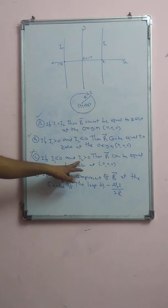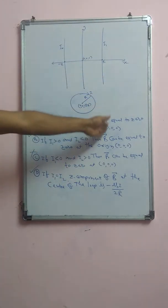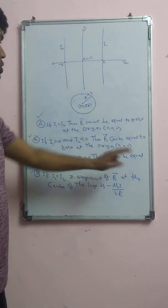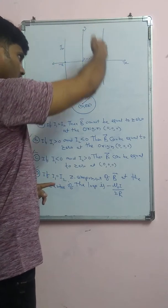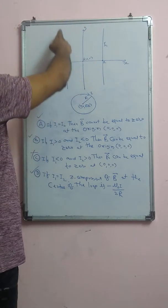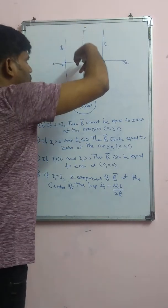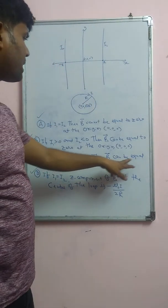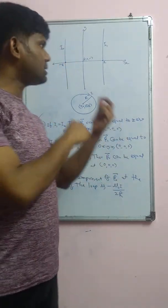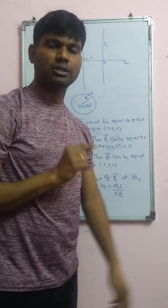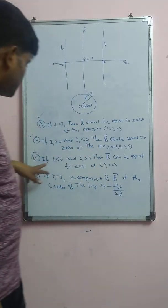Option C: if i1 less than 0 and i2 greater than 0 — i1 less than 0 means negative y direction, i2 greater than 0 means positive y direction — then B can be equal to zero. However, in this case, the magnetic field due to i1 is into the board, the magnetic field due to i2 is also into the board, and the circular loop's field is also into the board. All three contributions add together, so the magnetic field cannot be zero. Option C is wrong.